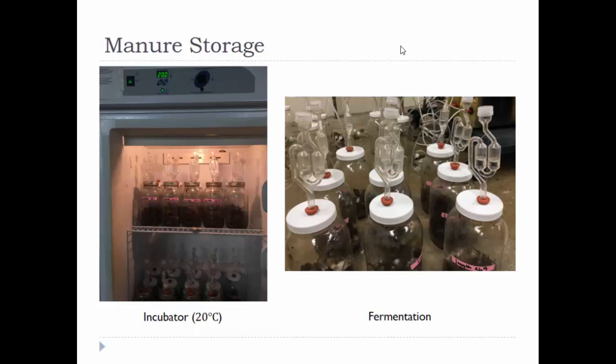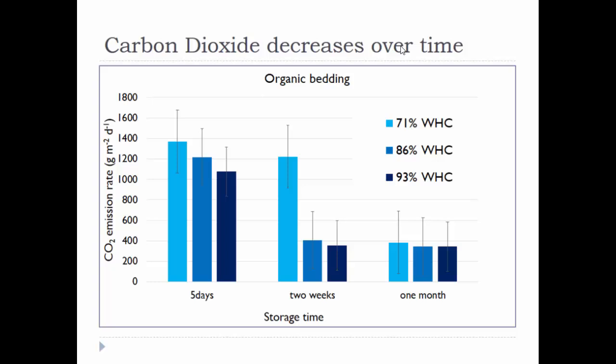We were also interested in what happens if we store the manure for different amounts of time. We stored manure with different moisture content for five different durations: one day, two weeks, one month, two months, and three months. All manures were stored at the same temperature and under aerobic conditions. Because we only finished up to one month so far, here are the results: among all the gases, the changes were not very pronounced, but for CO2 we can see it dropped really dramatically and clearly.